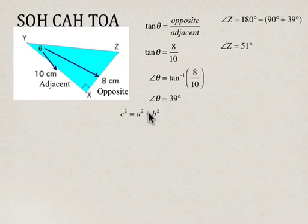So c squared equals a squared plus b squared. Remember that the side opposite the right angle is the hypotenuse. We're going to call that x because side x would be opposite angle X. So x squared is equal to 10 squared plus 8 squared.